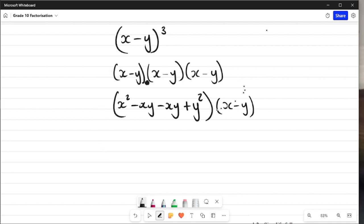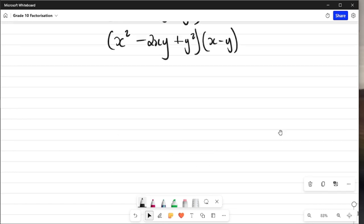Then moving on, I'm going to collect like terms or I'm going to group like terms within the bracket. So this is going to be x² - 2xy, because these two terms of mine here are like terms, plus y² in the bracket (x - y).